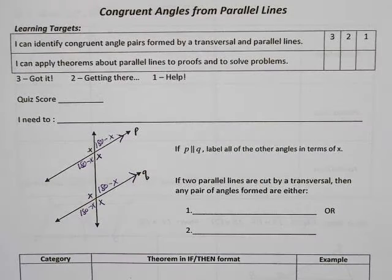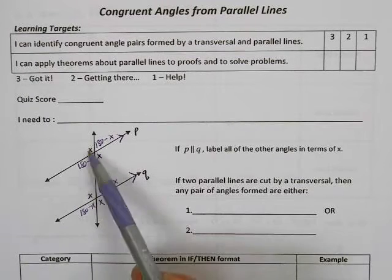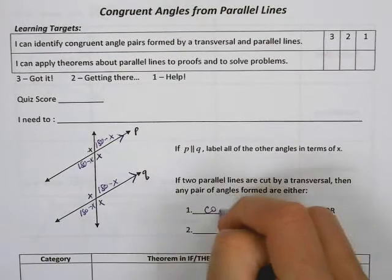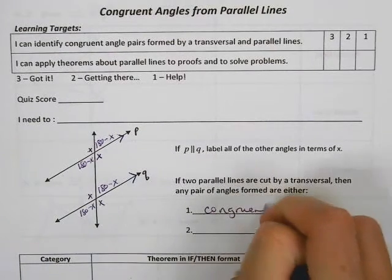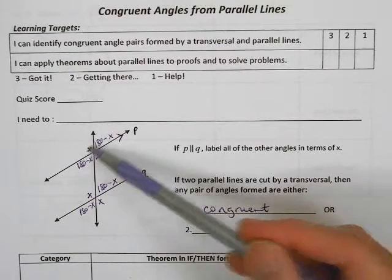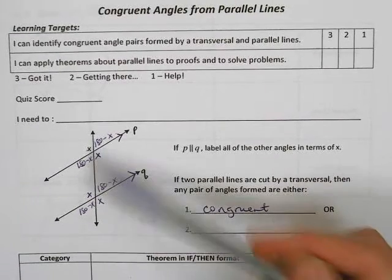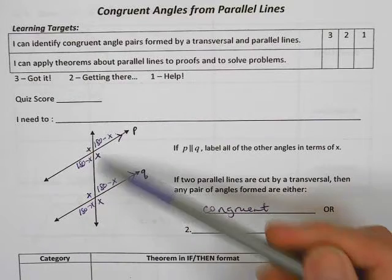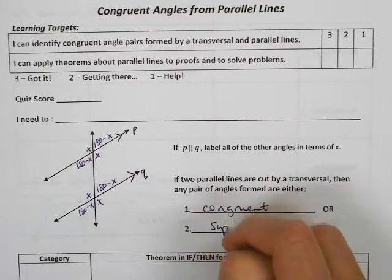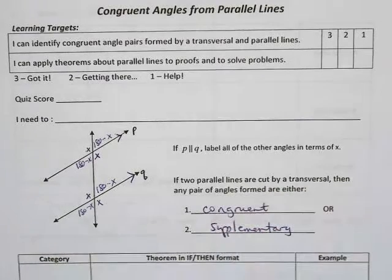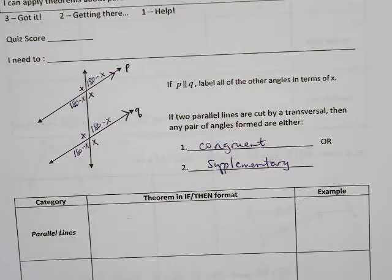You can see that as soon as we have parallel lines all of the angles either match — all these X's match — or all these 180 minus X's match, so they're either congruent or they're supplementary. These two angles are supplementary, these two are supplementary, this is supplementary to this, these two here are supplementary. So those are the only two relationships that exist, and we're going to describe that in theorems now.